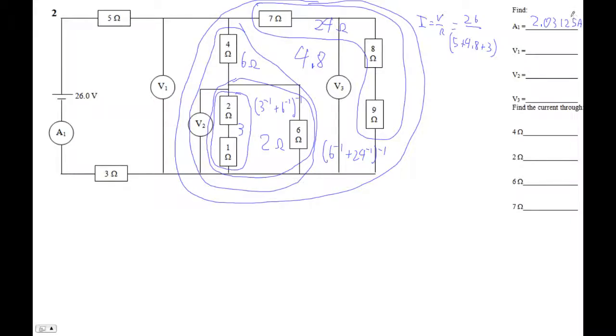26 divided by 5 plus 4.8 plus 3 is 2.03125. Let's see. Did I get that? Yes, I did. I'm on the right track. Again, on the assessment, I'm going to give you a1. If you get your answer and you round it to 3 sig figs and you don't get that, there's really no point in analyzing the rest of the circuit. So let's find V1.